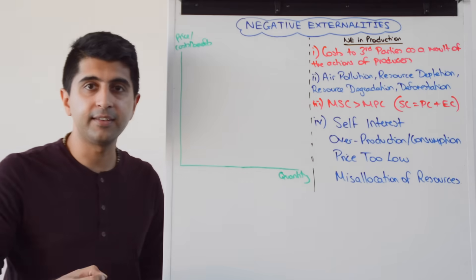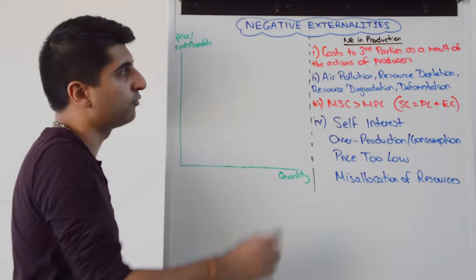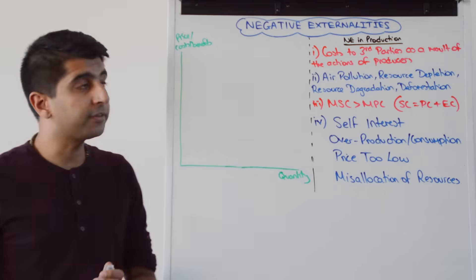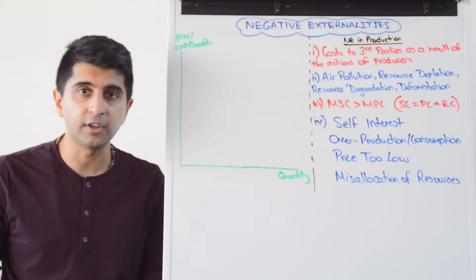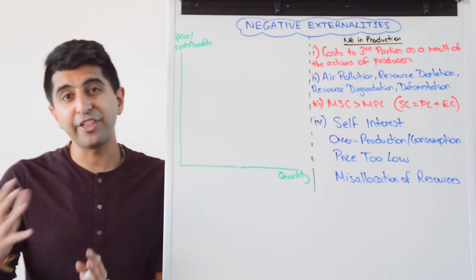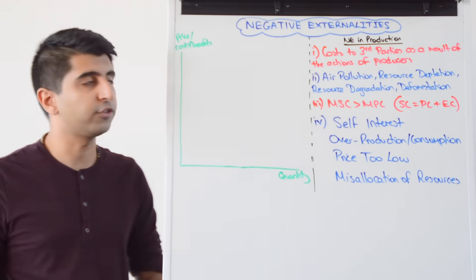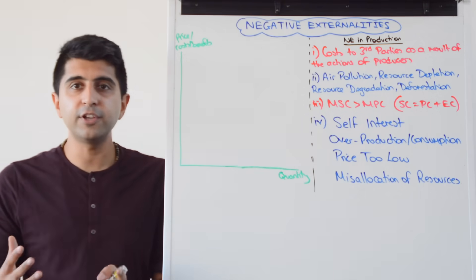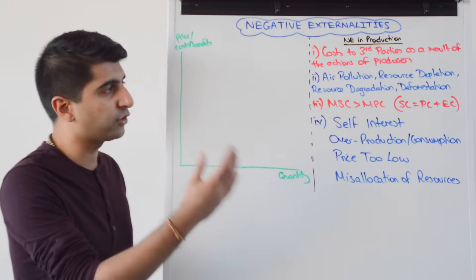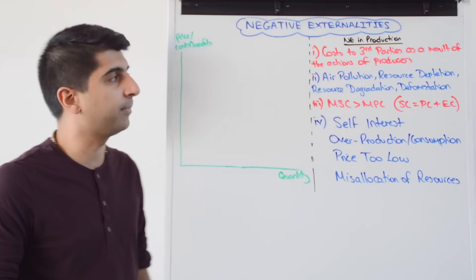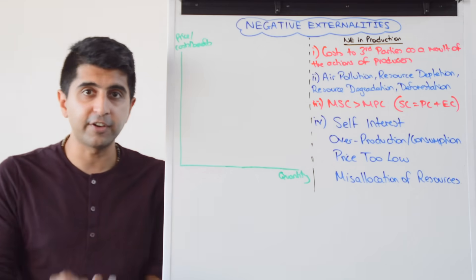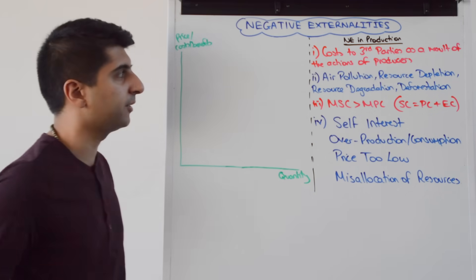Let's look at negative externalities in production first. These are costs to third parties as a result of the actions of producers. So, producers are producing something and third parties are suffering the costs. Third parties are individuals or economic agents who have got nothing to do with the activity or the transaction taking place — in this case, they've got nothing to do with the production itself, but they are suffering a cost as a result of the production.